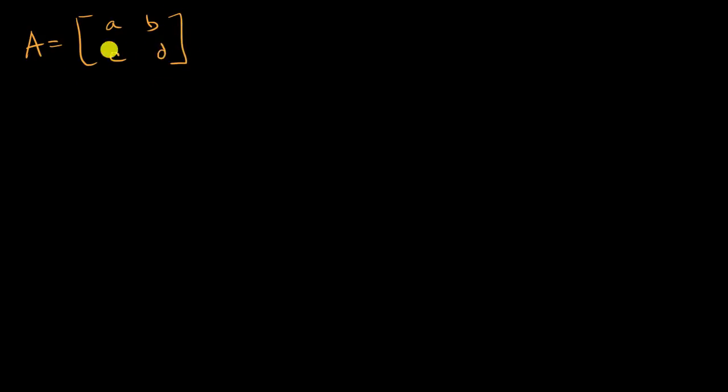We have a lot of practice taking determinants of matrices like this. The determinant of this matrix, same thing as the determinant of A, B, C, D, it's going to be equal to A times D minus B times C.